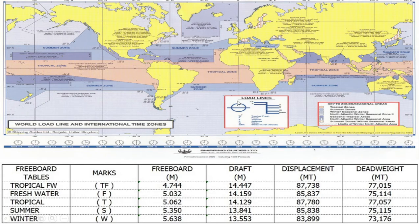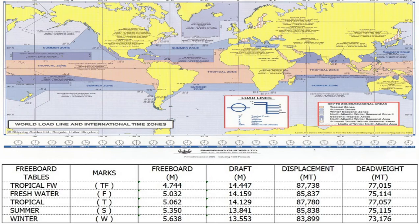The load line markings can be found physically on the ship's sides. As best practice, we need to ensure these markings are refreshed and remain visible. Classification societies also consider illegible markings as deficiencies.